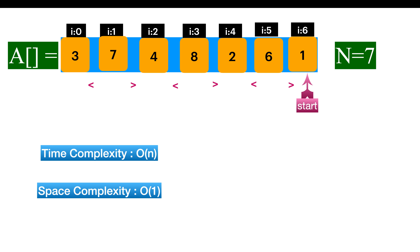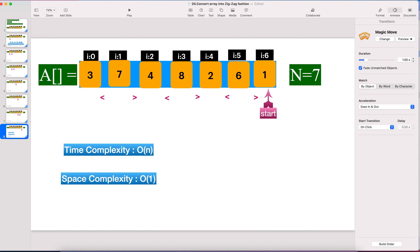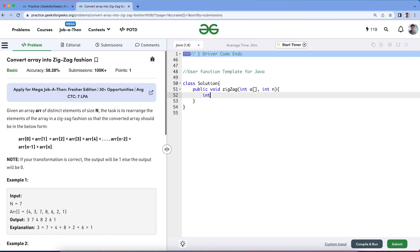Before moving on to the solution, if you really like the explanation, please click the like button and share your thoughts through comments for higher visibility. So we start from index 0, and as it is an even index, I'll just make a flag even index as true.